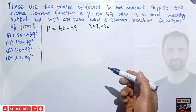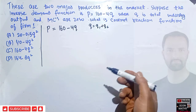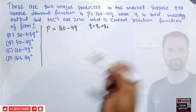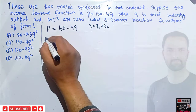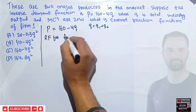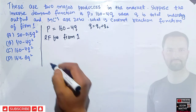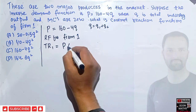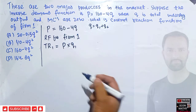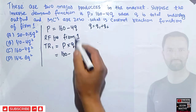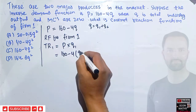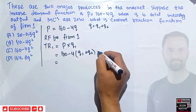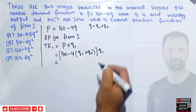In the Cournot model — I have explained the Cournot duopoly model in detail elsewhere — to find the reaction function for Firm 1, we first need to find total revenue for Firm 1, which equals price times quantity produced by Firm 1. Price is 160 − 4(q1 + q2), so TR1 = [160 − 4(q1 + q2)] × q1.